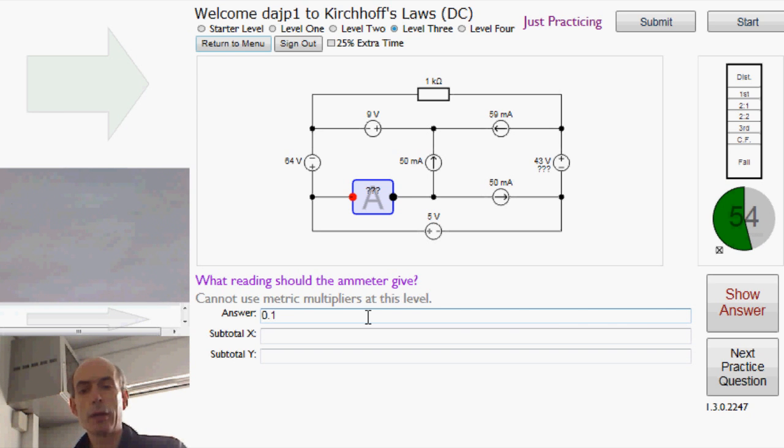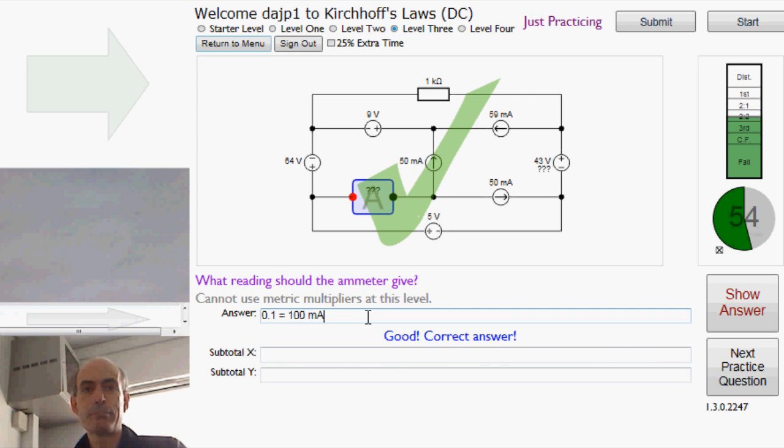So the answer is 100 milliamps, which I could just write as 0.1. Saves a bit of typing. Fine. See if I can find a slightly harder ammeter one.